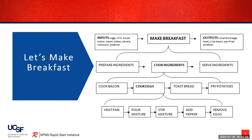On the slide before you, looking at the top left and moving right, you can see that we have a process for making breakfast. It begins with inputs, which are our ingredients — things such as eggs, milk, bread, and butter — with a primary step following being to make the breakfast, with our outputs following of scrambled eggs, toast, crisp bacon, and pan fried potatoes.